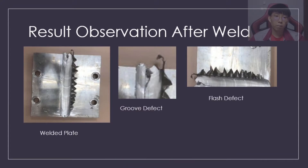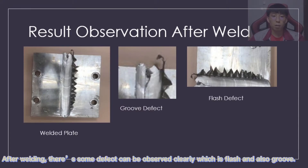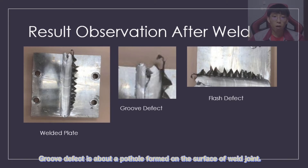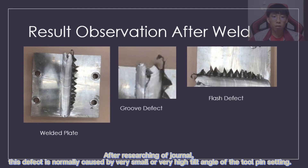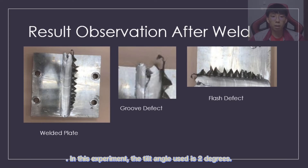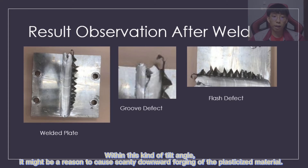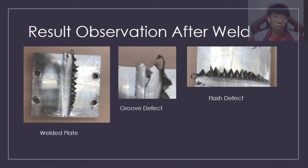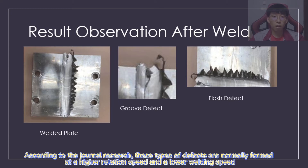Next, results and discussion. After welding, some defects can be observed clearly, which are flash and groove. Groove defect is a puff hole formed on the surface of the weld joint. According to the journal, this defect is normally caused by a very small or very high tilt angle of the two-pin setting. In this experiment, the tilt angle used is 2 degrees, which might cause insufficient downward forging of the plasticized material. Flash defects are normally formed at higher rotation speed and lower welding speed.